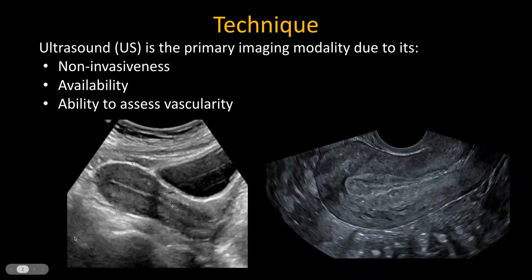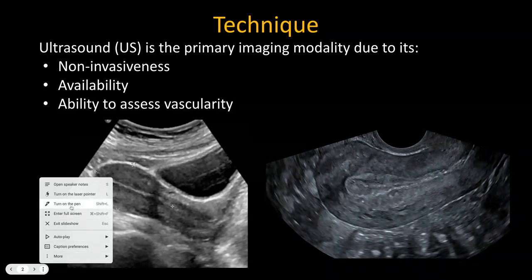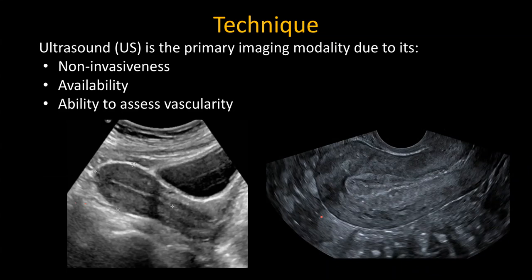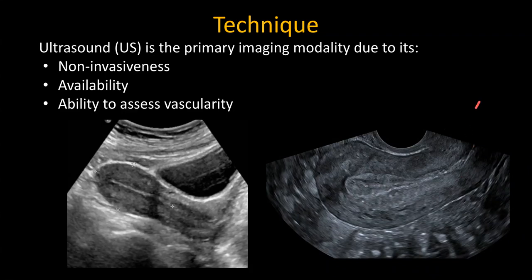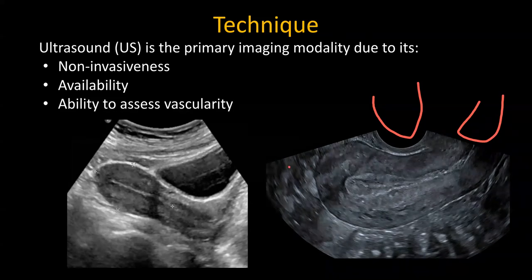Once we are done with the trans-abdominal exam, we usually proceed to the trans-vaginal exam, which gives us better evaluation of the pelvic structures. If you haven't spent a lot of time scanning trans-vaginal ultrasounds, I would suggest during your ultrasound scanning rotation, scan a few patients so that you get oriented well towards the anatomy. Imagine the transducer is in the vagina and you're looking at the uterus — like a sagittal section in CT looking towards the uterus through the vagina.